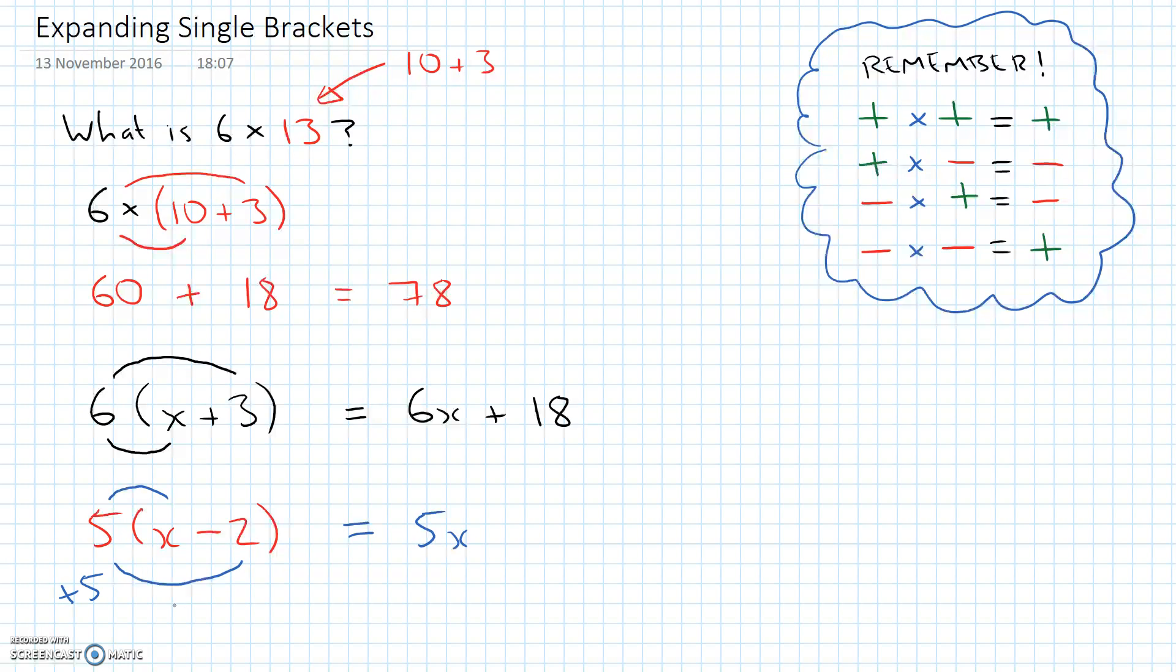Because this time we've got a positive 5, and we've got to multiply that by a negative 2. So we're going to do positive 5 times a negative 2. Well, if I look at my table, then a positive times a negative is going to give me a negative value. So a positive times a negative is going to give me a negative. So I know I'm going to get a negative here. And I can do 5 times 2, that just gives me 10. So I've got 5x minus 10. And that negative 10 came from the positive 5 times the negative 2.